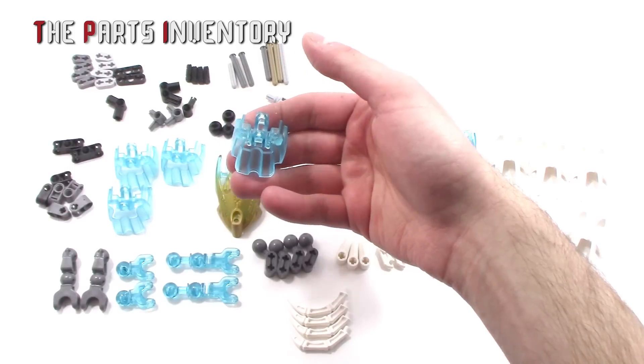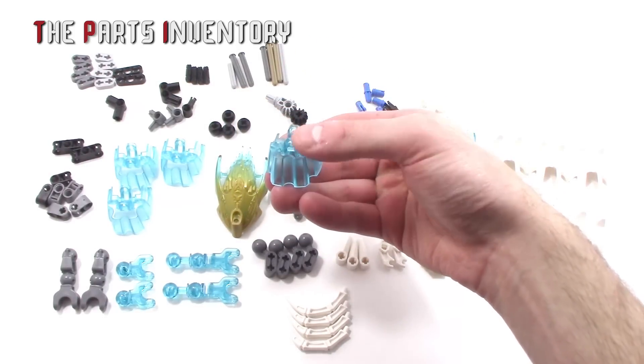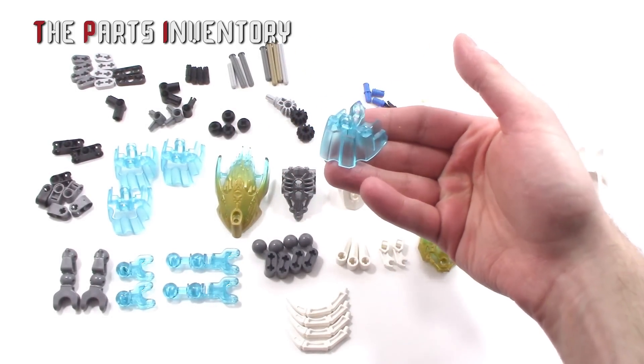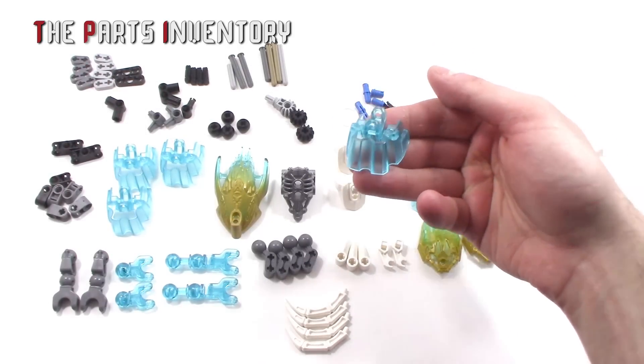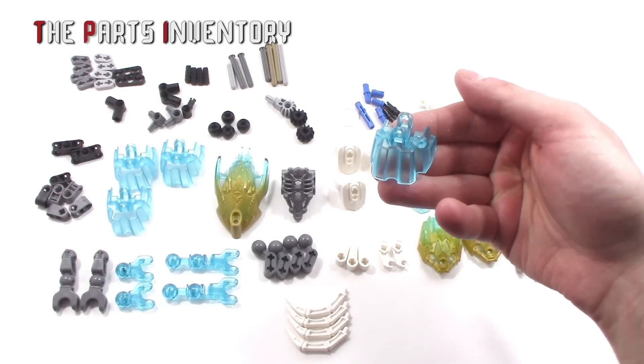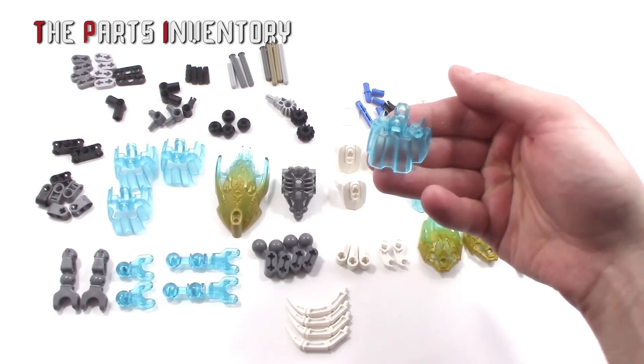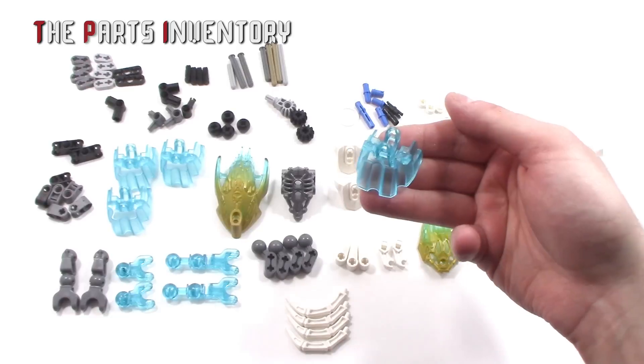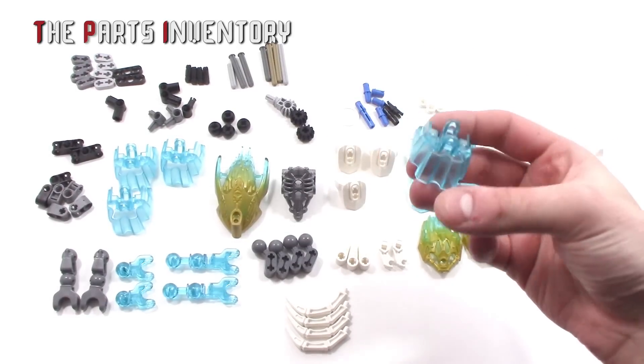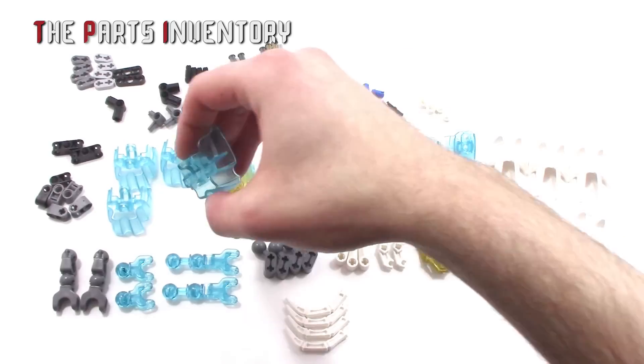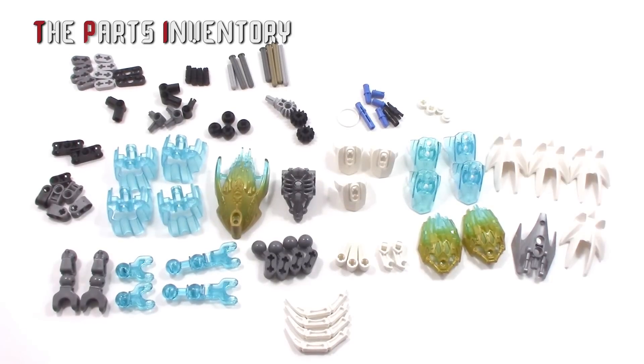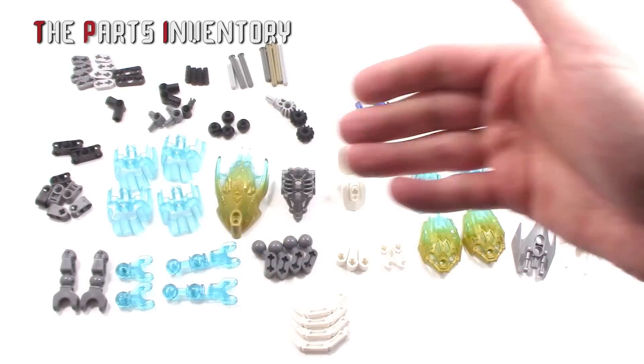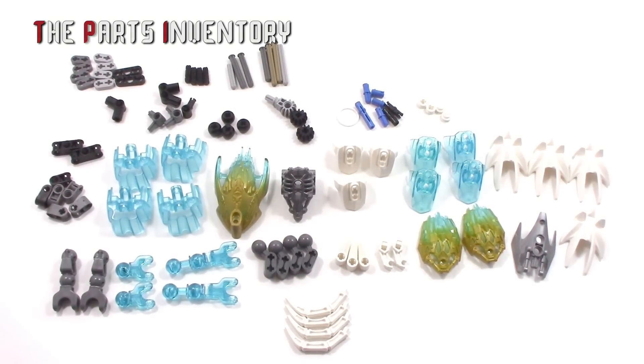These frozen hoof pieces are probably the hardest parts to find. These were from the Chima line, and I believe the only one to offer this part was the elephant. It only came with one of these, so you'd have to get that set four times or do what I did and go to Bricklink.